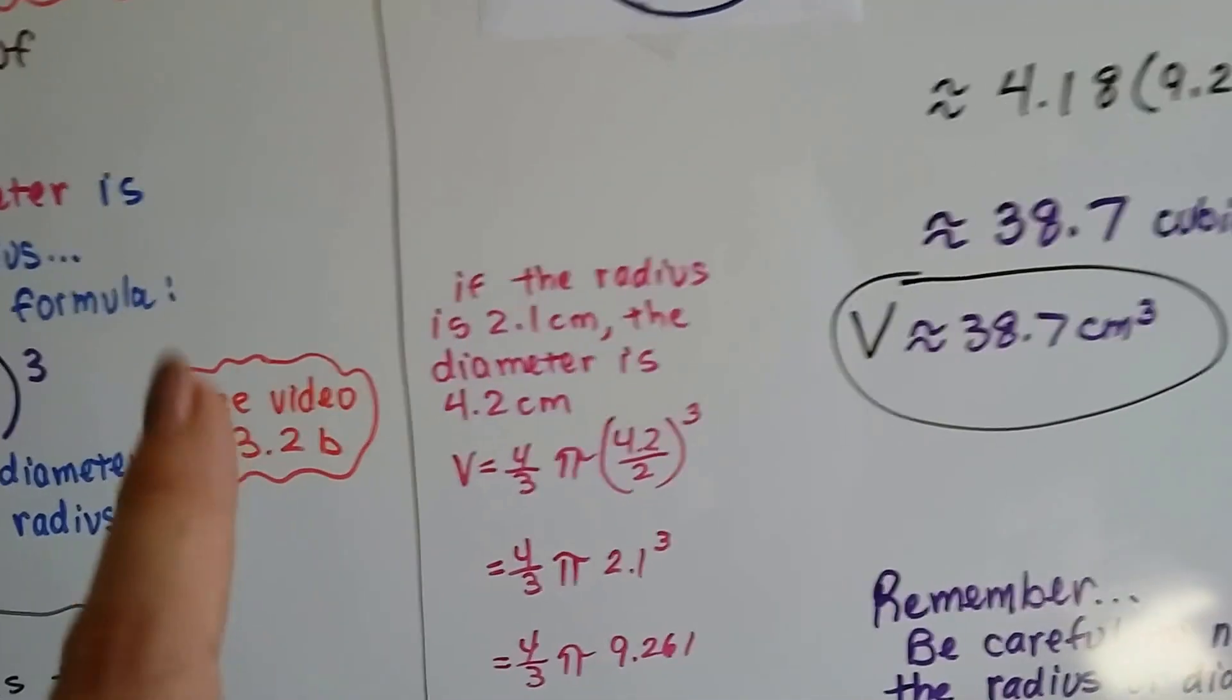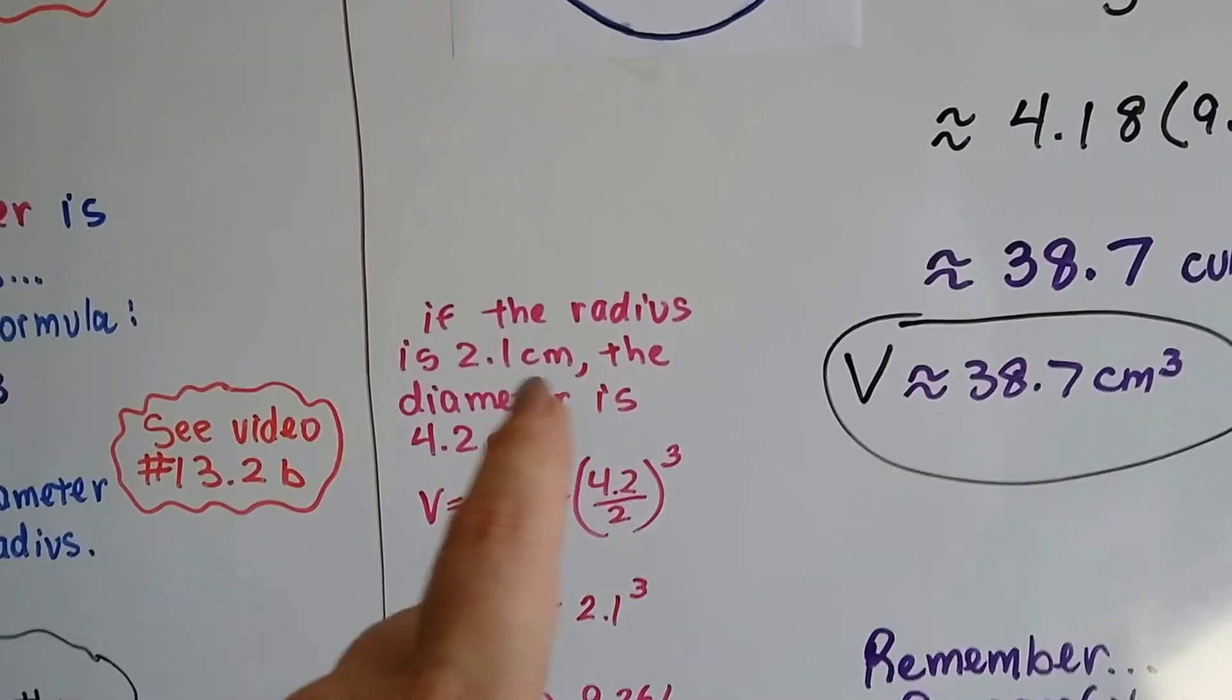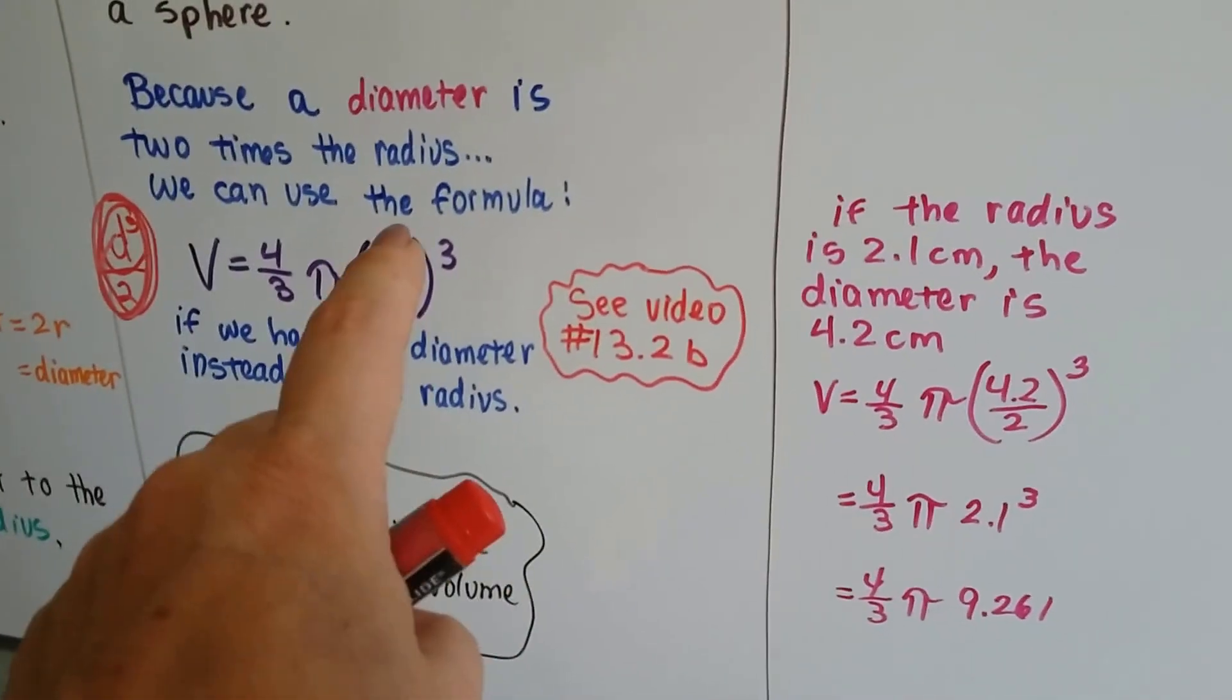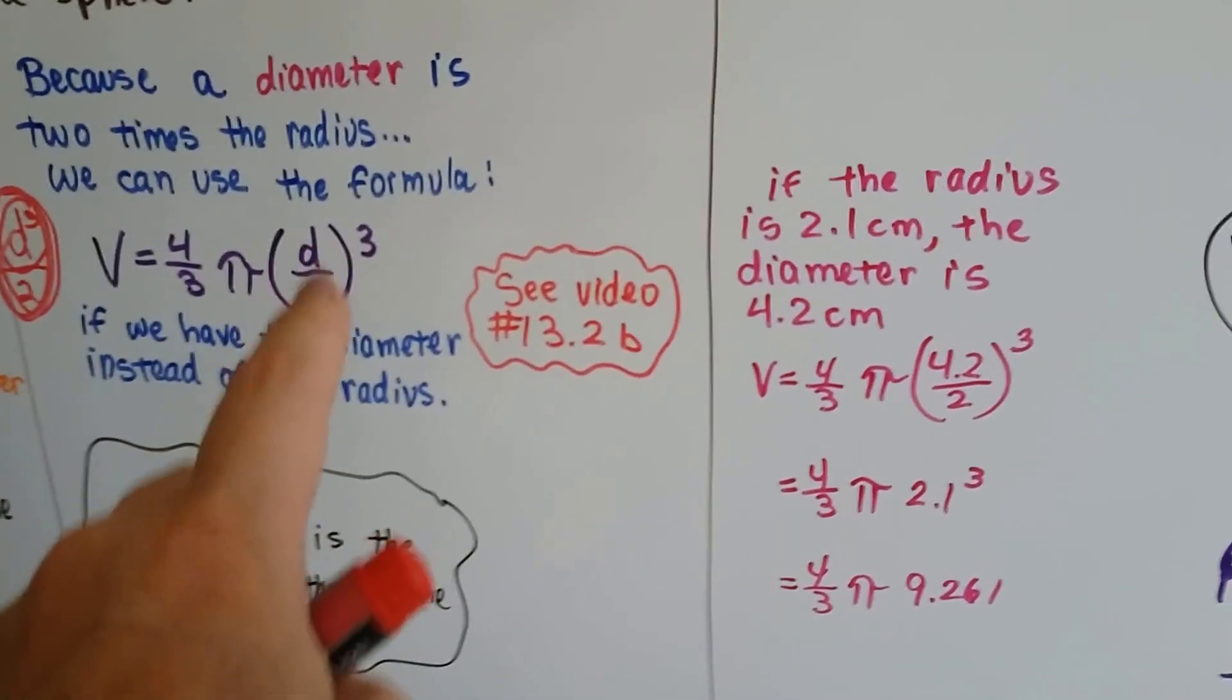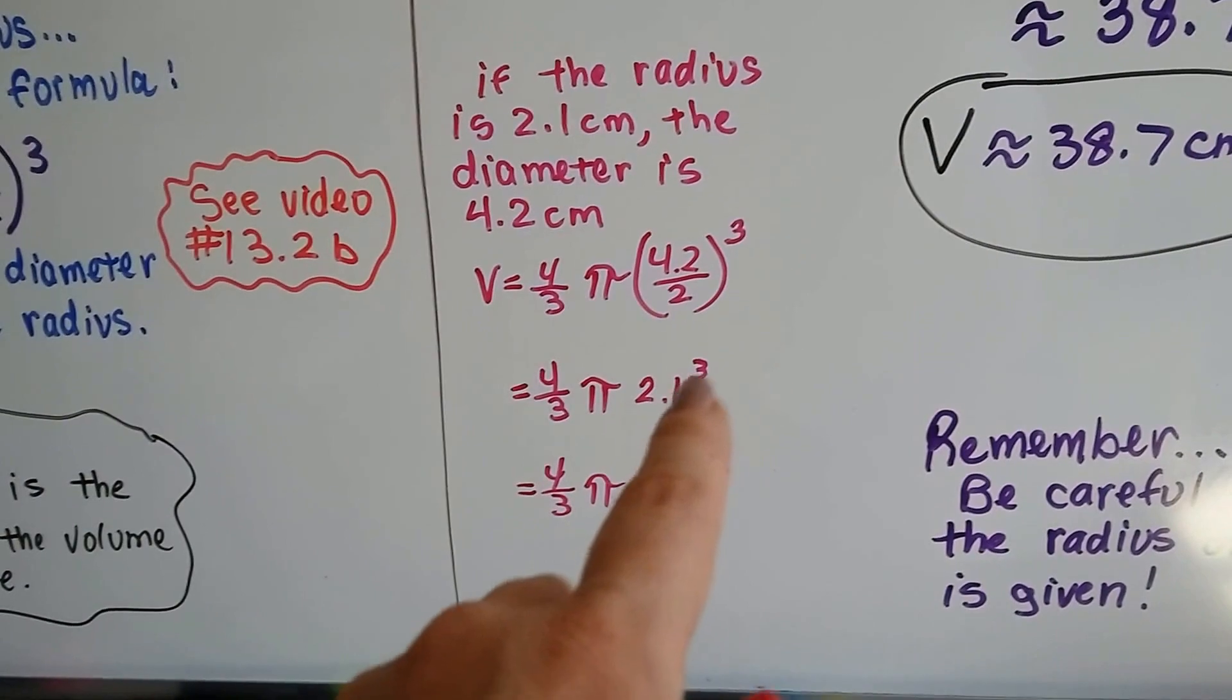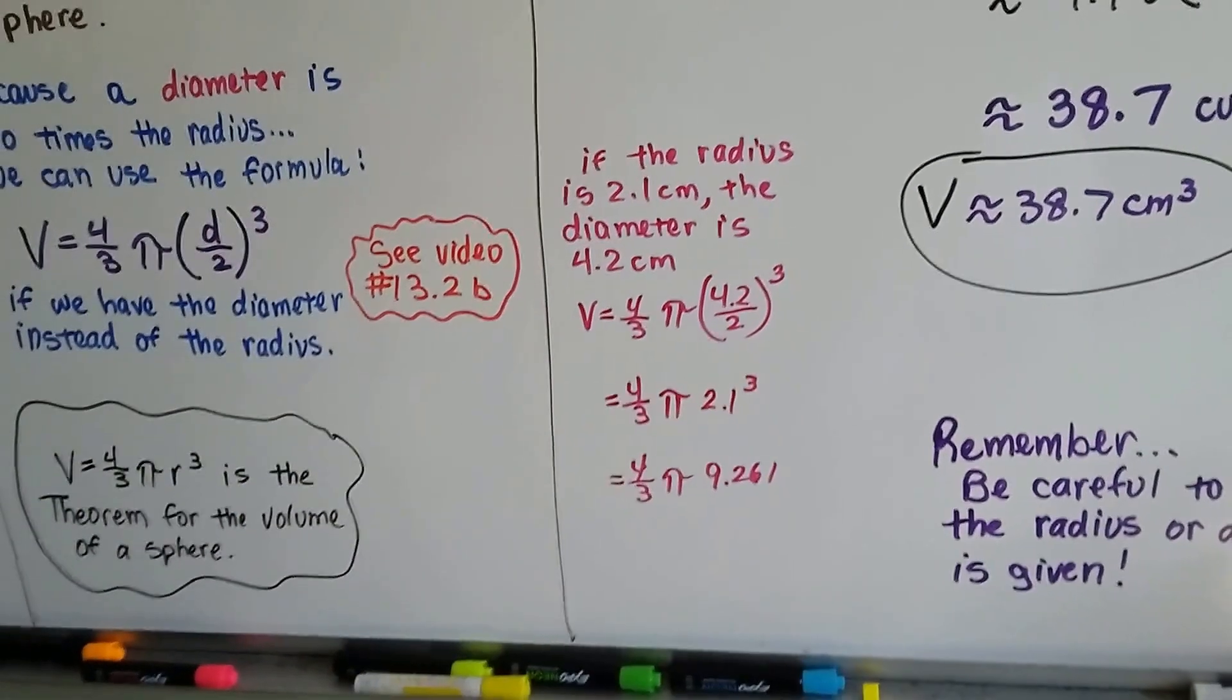Now, what if we had the diameter, and we didn't have the radius? If the radius is 2.1 centimeters, like this shows, the diameter is 4.2. So, we could have put it so that, like I explained here, we could have put the 4.2 diameter over 2, so it would be divided by 2 to get the radius, and then cubed. So, we would have had the same answer. 2.1 cubed is still 9.261. So, it would have been the same answer, but we would have written it in this way. If we had the diameter instead of the radius.